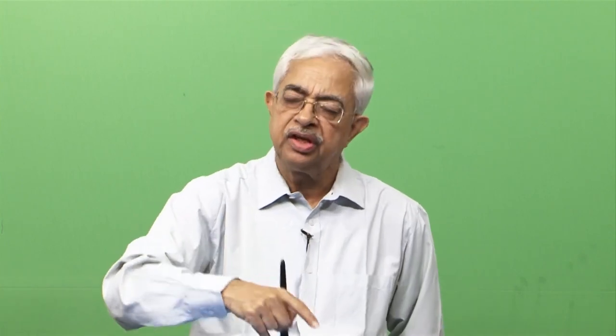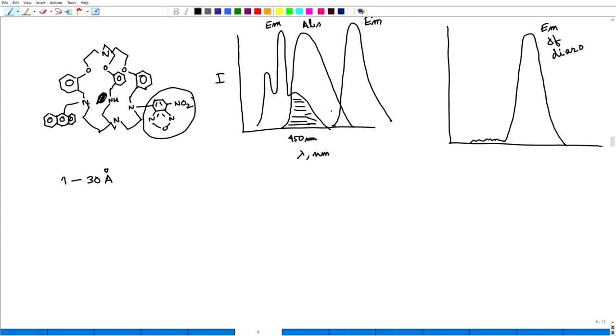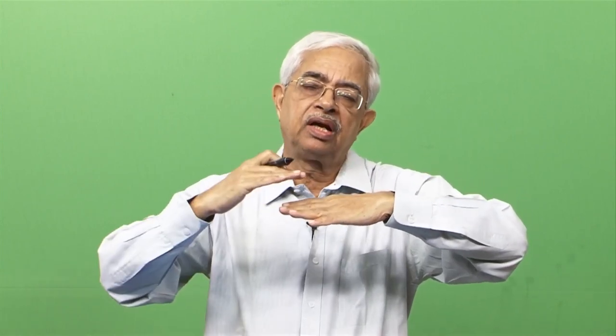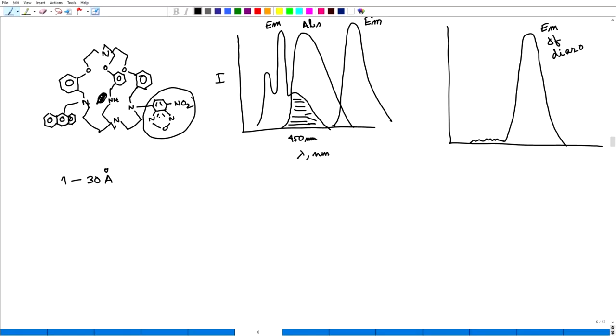Why? I do not see its emission spectrum because this emission energy will be completely transferred to the diazo compound, provided the distance between them is up to around 30 angstrom and they are oriented in the right direction. The dipole moments of both should match — they should not be orthogonal to each other.